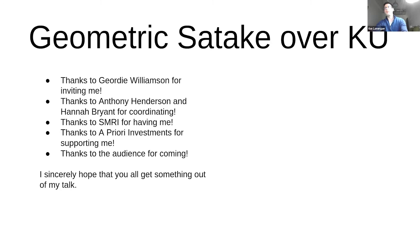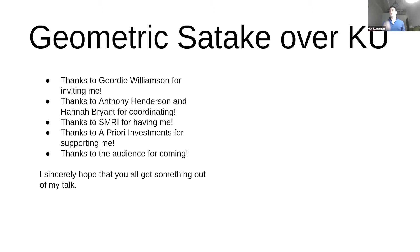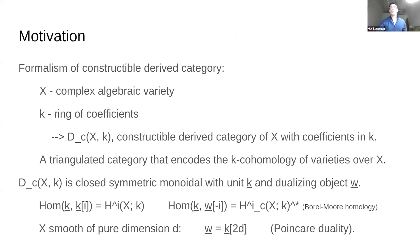The title of my talk is Geometric Satake over KU. Really what I'm trying to advertise is that we in representation theory should try to work less with cohomology and more with K-theory as much as we can, and maybe there's at least one good motivating example to do that. Before I get onto that, I just want to go back over some background about what I mean when I say we use cohomology in geometric representation theory.